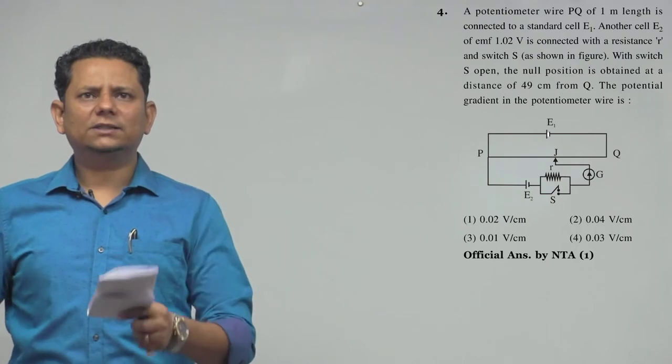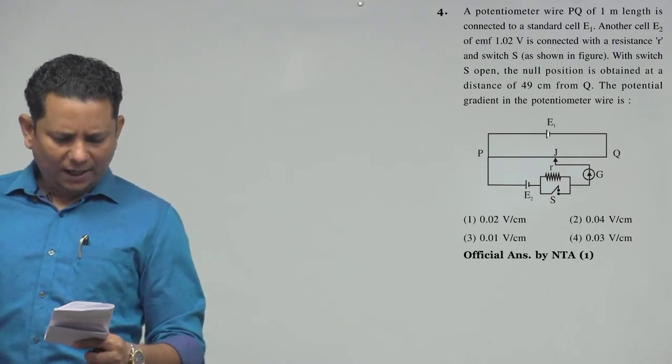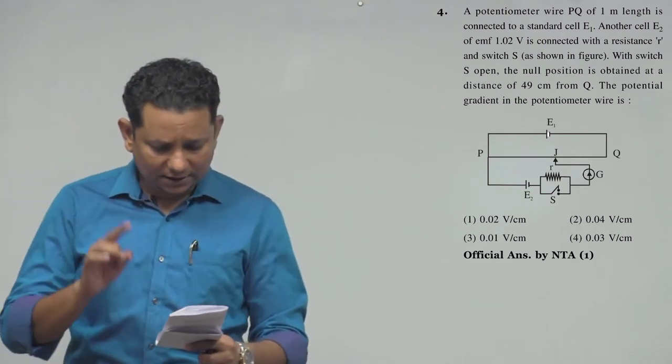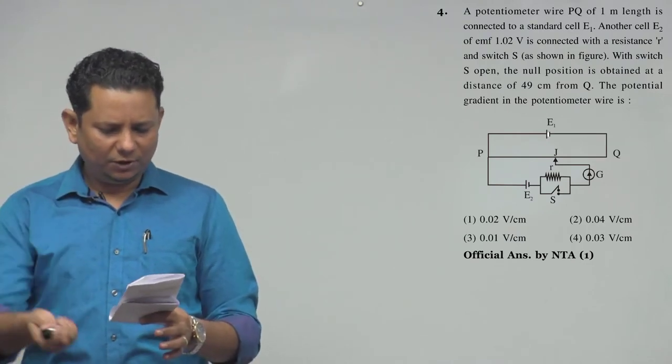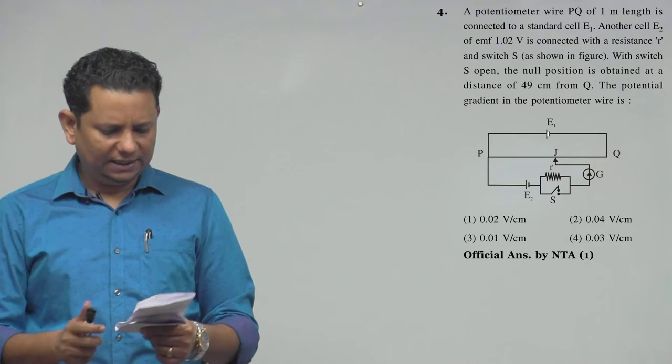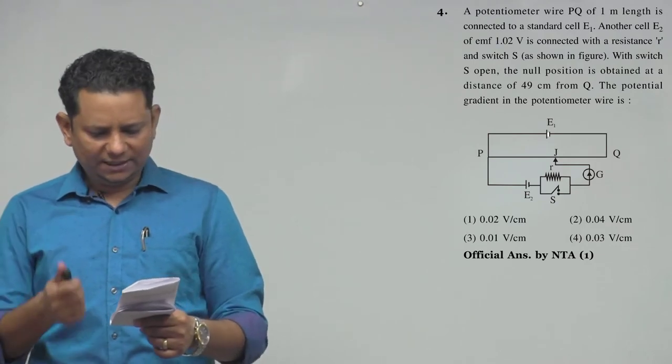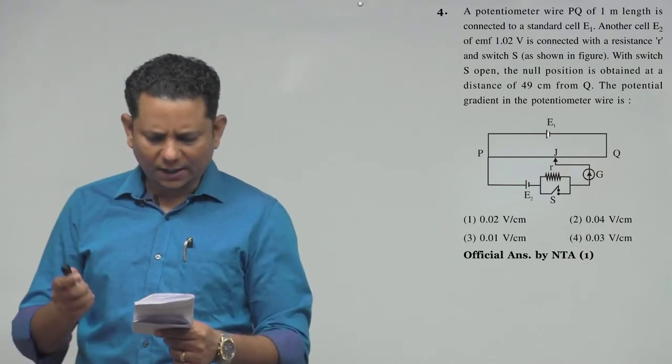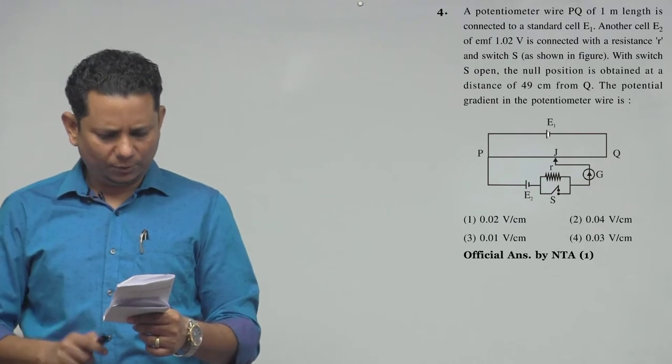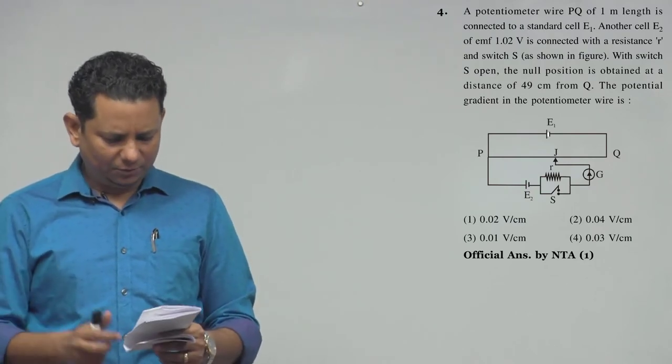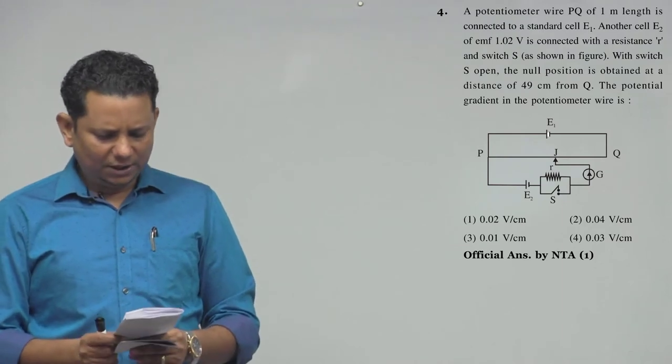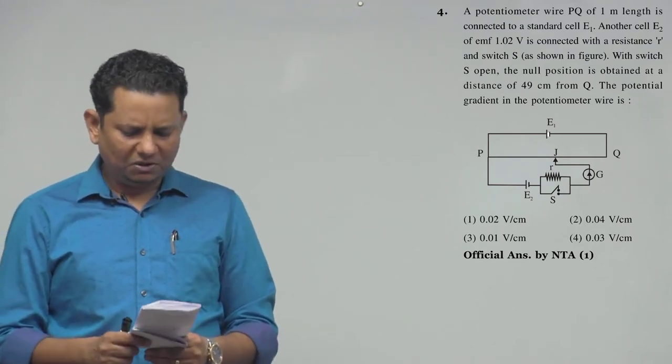Our next question: A potentiometer wire PQ of 1 meter length is connected to a standard cell E1. Another cell E2 of EMF 1.02 volt is connected with resistance R and switch S as shown in the figure. With switch S open, the null position is obtained at a distance of 49 centimeter from Q. We need to find the potential gradient of the potentiometer.